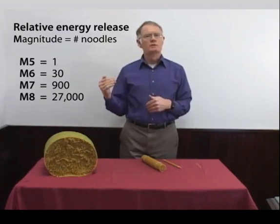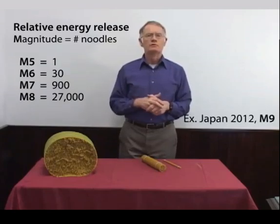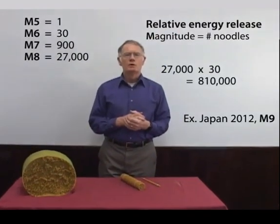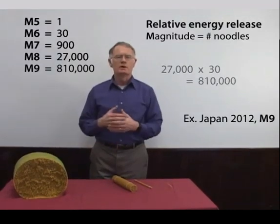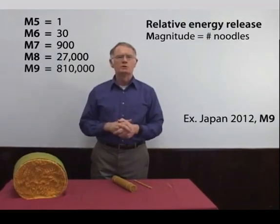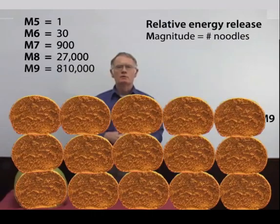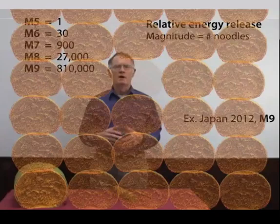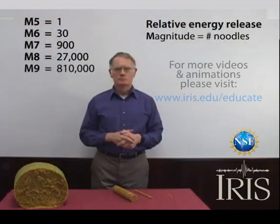If you want to go to a magnitude 9 earthquake — for example, the Japan 2011 earthquake — we'd have to take this bundle of 27,000 strands of spaghetti multiplied by another factor of 30, and that bundle of spaghetti would go from floor to ceiling about the width of a door frame.